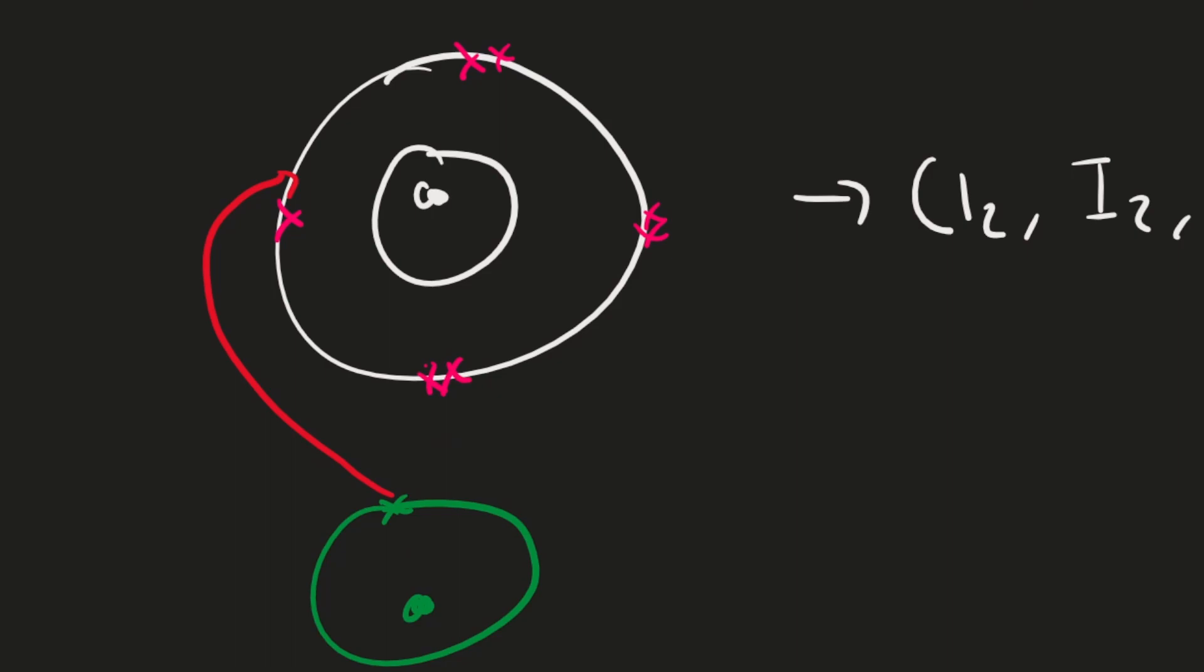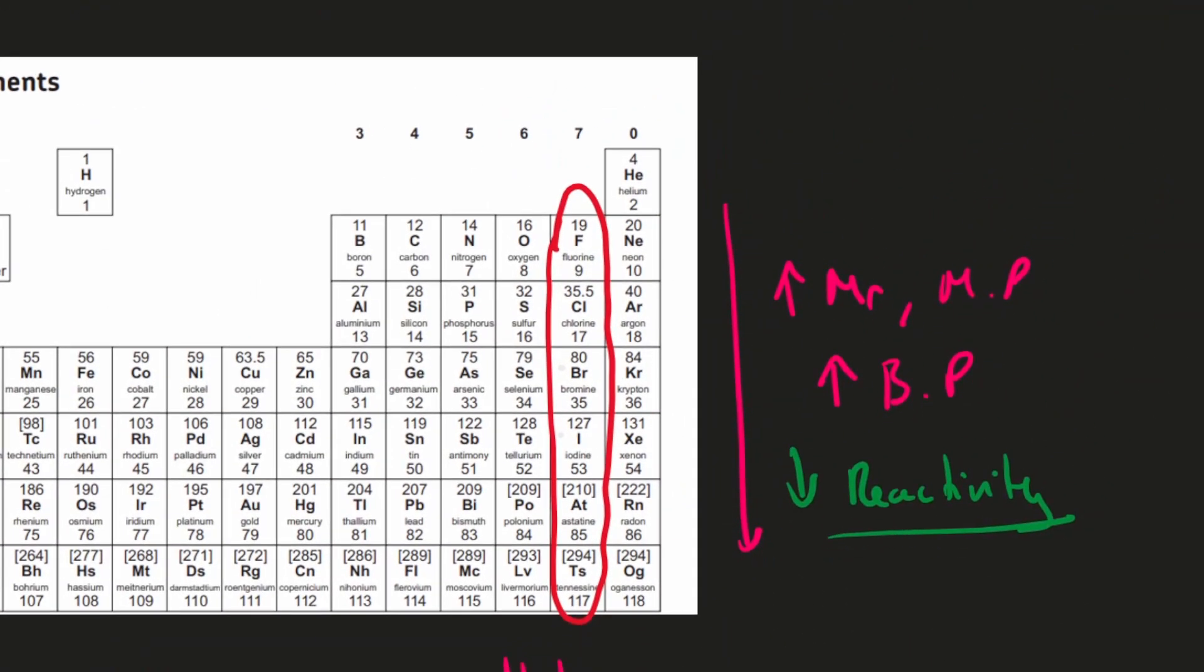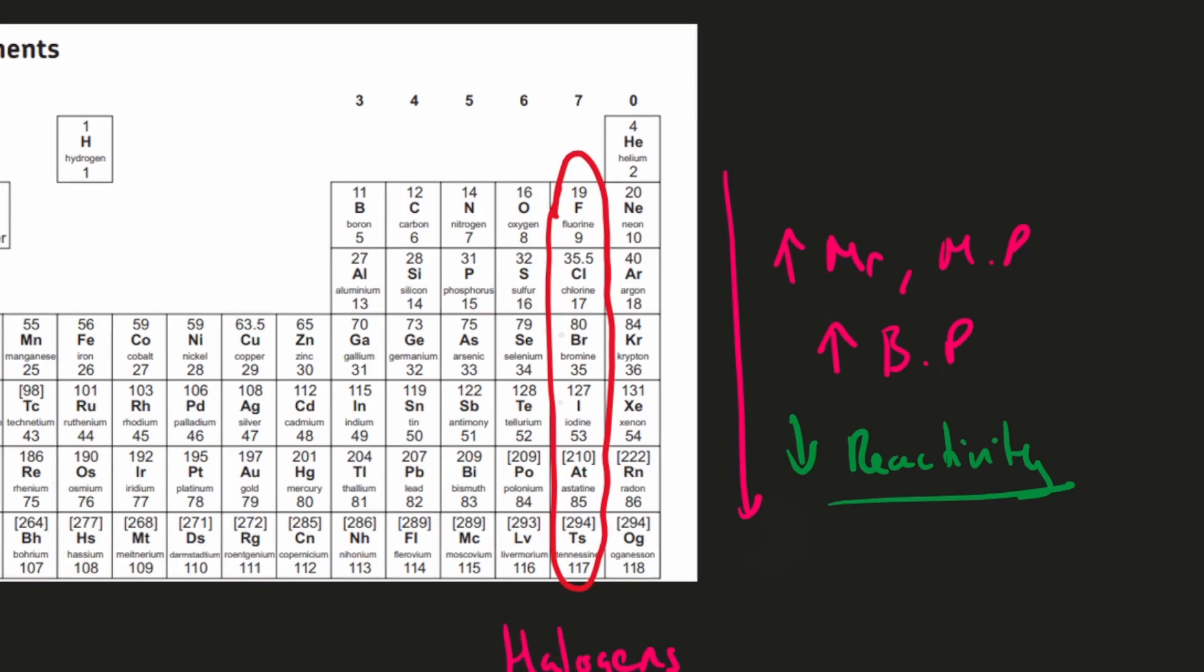And much like Group 1, that depends on the distance between the nucleus and the outer shell electron. When that distance is larger, the attraction between the electron they're trying to gain and the nucleus is smaller, so they are less reactive. So if you go up the group, the period number decreases, and when the period number decreases, the distance between the nucleus and the outer shell electron is smaller, and therefore the attraction is greater and the reactivity increases. That's why the reactivity decreases as you go down the group.